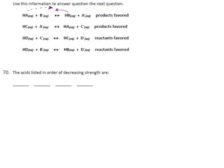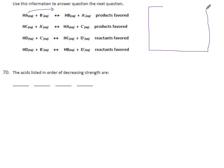If we knew the acid constants for these two, we could compare them, and whichever side had the higher acid constant would be the winner. But in this case they're working the other way, saying the products are favored in this reaction, meaning HA is winning. That means if we had an acid base table, you would find HA on it and it would be higher up than HB. HA is a stronger acid with a higher acid constant. That's why it's able to force the reaction to the right.